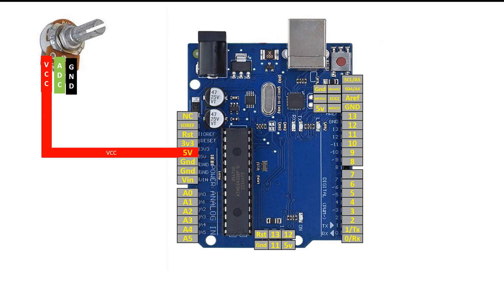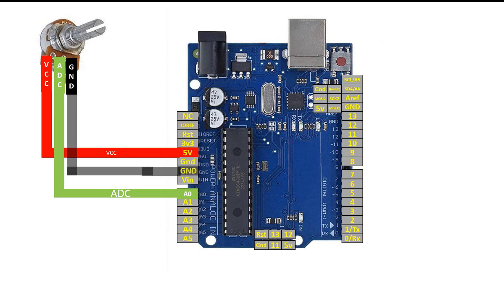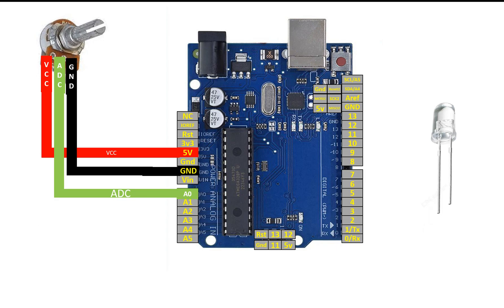For the VCC pin, connect it to the 5V pin of your Arduino. For the ADC pin, you can use any ADC pin of your Arduino Uno — you have six pins from A0 to A5. I'm going to use pin A0. For the ground pin, just connect it to the ground of the Arduino Uno.